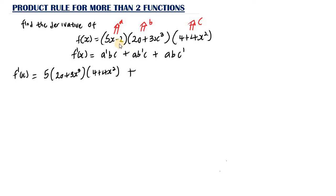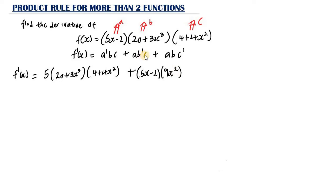Continuing, plus 5s minus 2 multiplied by B prime, which is the derivative of the second function. The derivative of 20 plus 3s cubed gives us 9s squared — the derivative of the constant 20 is 0, and for 3s cubed we bring down the power 3, multiply by 3 to get 9, and subtract 1 from the exponent to get s squared. So this term is multiplied by 9s squared, then by C which is 4 plus 4s squared.